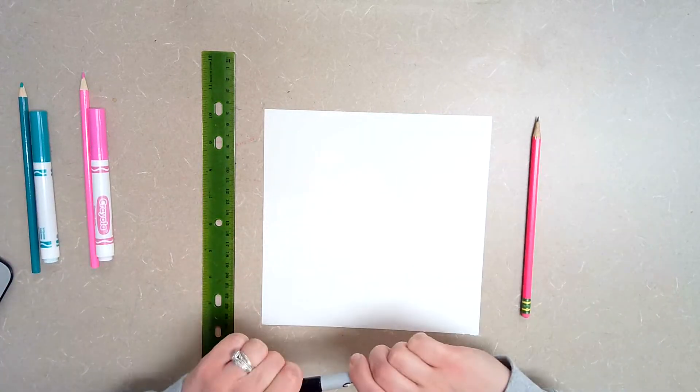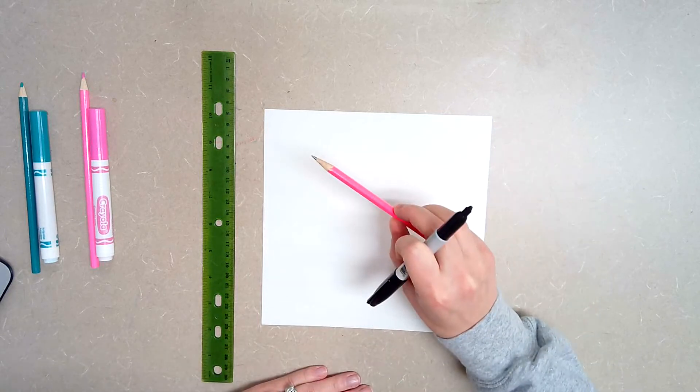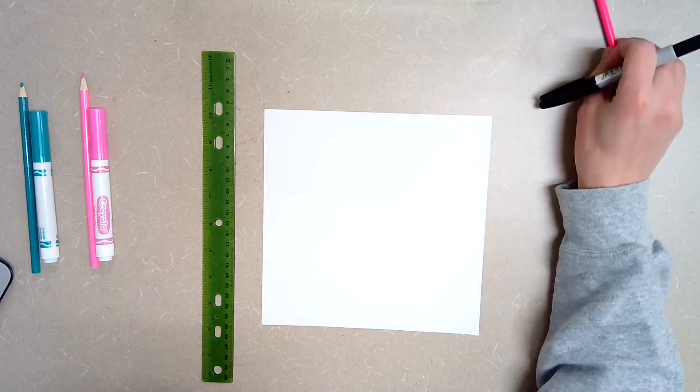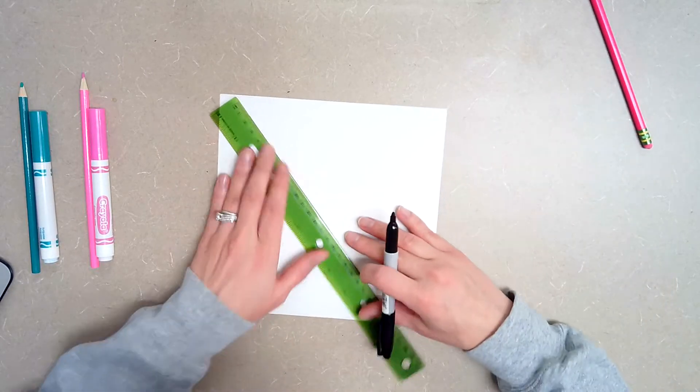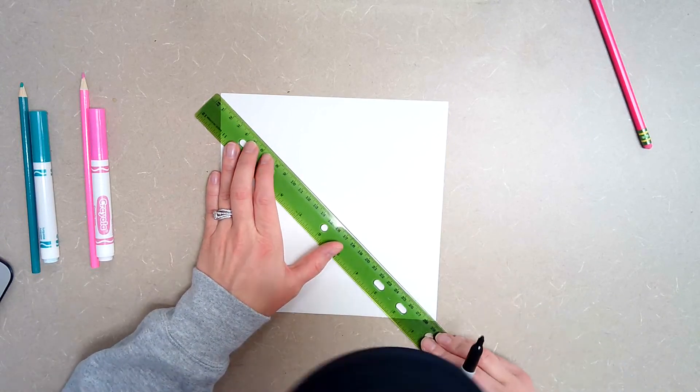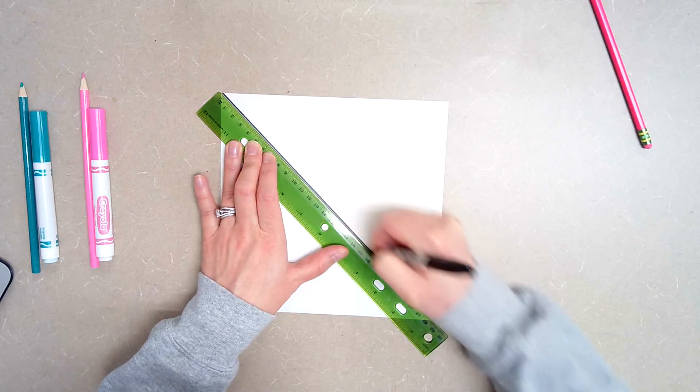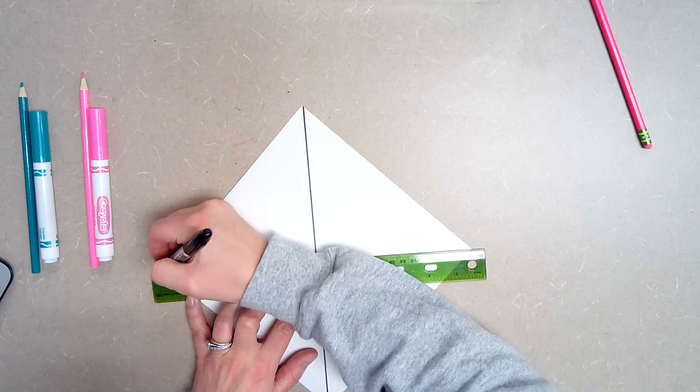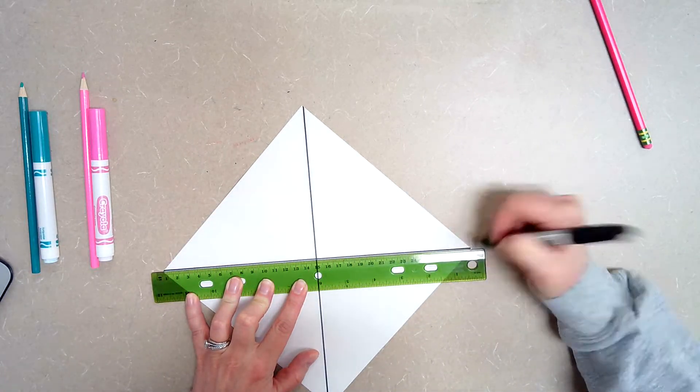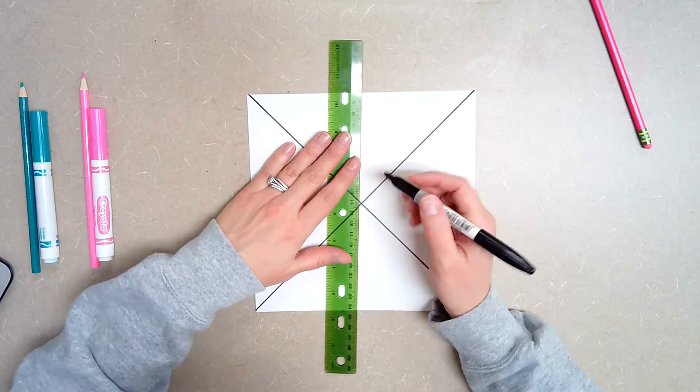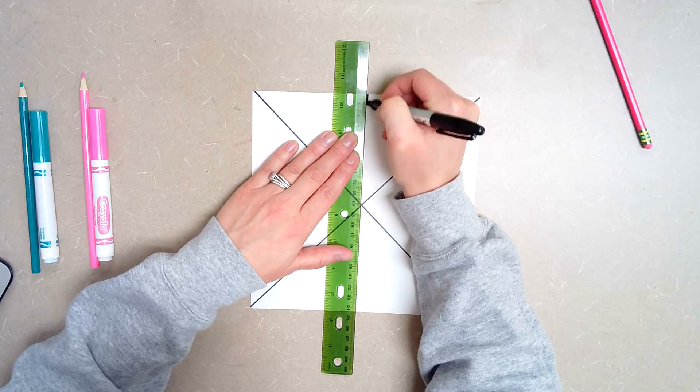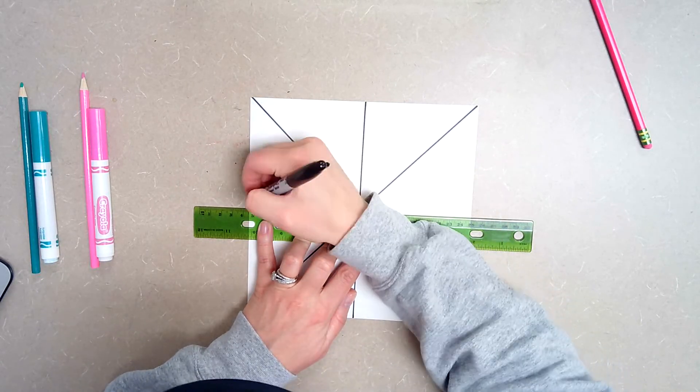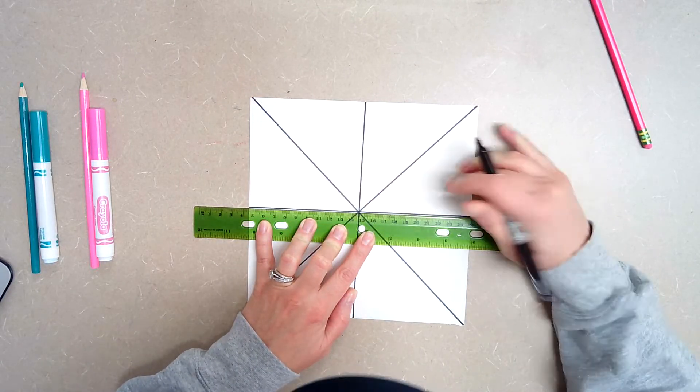So the first thing I'm going to do is I am going to start with sharpie. You will start with pencil. The reason why I want you to start with pencil is just in case you make a mistake that you can go back and erase. Then you will trace with sharpie. So I'm going to take my ruler and I'm going to line it up corner to corner and I'm just going to draw my first line and then I'm going to do the same thing the other way corner to corner. And then I'm going to divide it in half right down the center and in half the other way. So it almost looks like a snowflake.